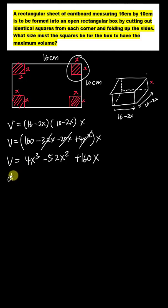So if the volume will be maximum, means dV/dx will equal 0. Then I just differentiate this one, and I get 12x squared minus 104x plus 160 equals 0.